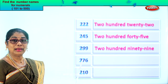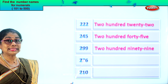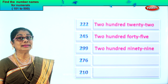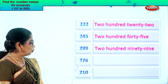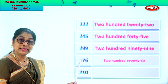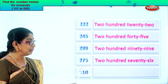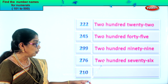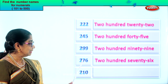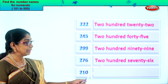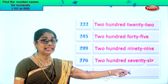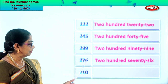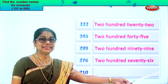Let's look at the next numeral. You have six in the ones place, seven in the tens place, and two in the hundreds place. Two hundred seventy-six. So we write two hundred first, then we write seventy-six. The spelling of seventy should be correct. Two hundred seventy-six.